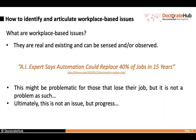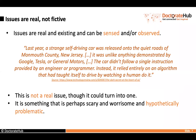This is something very important: issues are real, they are not fictive. Let's look into this case. Last year, a strange self-driving car was released onto the roads of Monmouth County, New Jersey. It was unlike anything demonstrated by Google, Tesla, or General Motors. The car didn't follow a single instruction provided by an engineer or programmer; instead, it relied entirely on an algorithm that had taught itself to drive by watching a human do it. Now, this is perhaps scary and worrisome, but in the current form it's not a real issue — it's only hypothetically problematic.